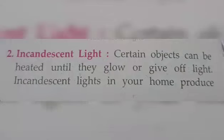Our next type is incandescent light. Certain objects can be heated until they glow or give off light. Kuch objects tab tak heat up hote hain jab tak ki woh glow nahin karte. Light bulb ka example hai ki light bulb ke andar ek filament laga hota hai jo tungsten ka bana hota hai.